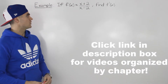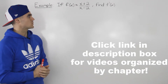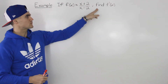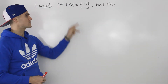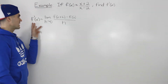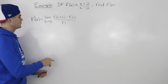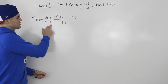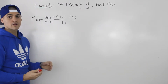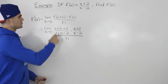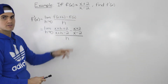In this video we're going to do an example where the function f(x) is equal to (x+2)/(x-2) and we have to find f'(x), the derivative of this function. To find that derivative, we're going to use the definition of a derivative: the limit as h goes to 0 of f(x+h) minus f(x), all over h. For f(x+h), we just plug in x+h for the x values in the function.